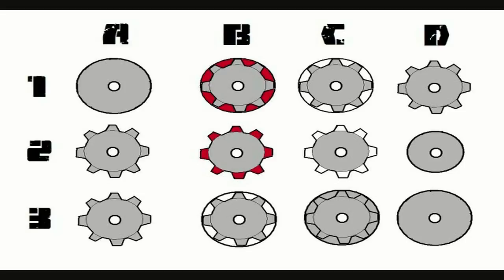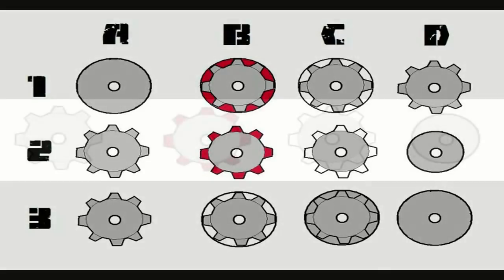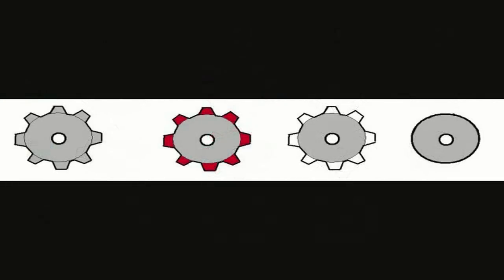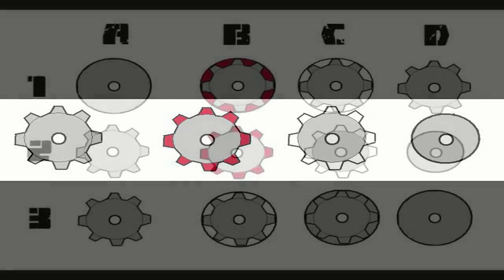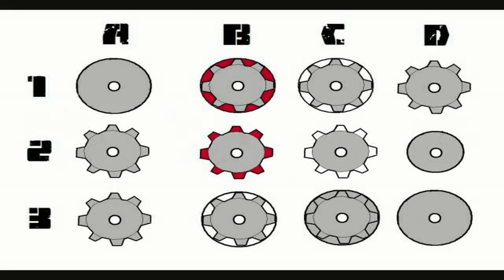Let's look at row number two. We have the fluted barrel that we ended up with in row one, column D. We're going to take that barrel and look at row two — now we're going to remove more material from the flutes, cutting those flutes off. In row two, column B, the flutes are being ground off and we're making it into a round barrel again. So we've removed material from a fluted barrel and made it round. Anytime you remove material, the rigidity goes down. In this case, the round barrel in column D — where we removed material to get that shape — is going to be less rigid than the fluted barrel we started with in column A.